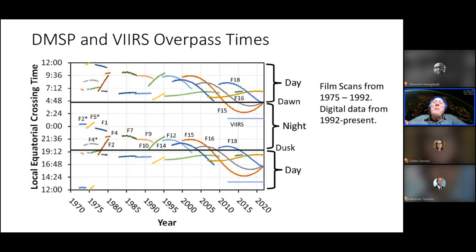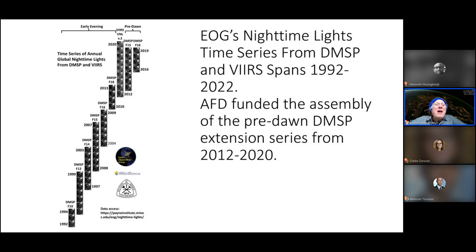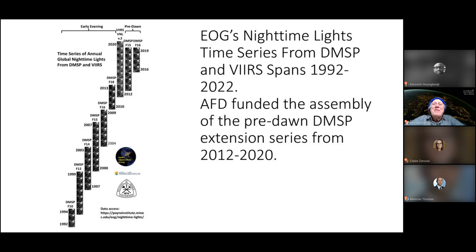We have a mix of early evening, after-midnight, and pre-dawn data, but we can extract usable information from all of it. The chart showing years and product availability — which Kenneth helped build — starts in the lower left at 1992 and ends in the upper right with recent years. Different columns represent different satellites, generally with some overlap between succeeding satellites, allowing you to bridge from one to the next up this ladder from the early days to the present.